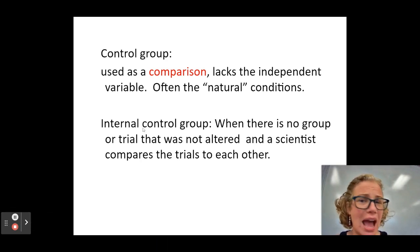Some experiments don't have a clear control group. Like if you're looking at the angle of a ramp and how far the ball rolls. There is no like natural angle for a ramp right? That doesn't even make sense. So sometimes we do what's called an internal control and that means that we're just going to compare the different trials to each other because there was no natural thing like water in the first experiment we talked about.